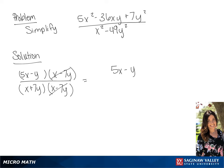We will get a final answer of (5x minus y) over (x plus 7y).